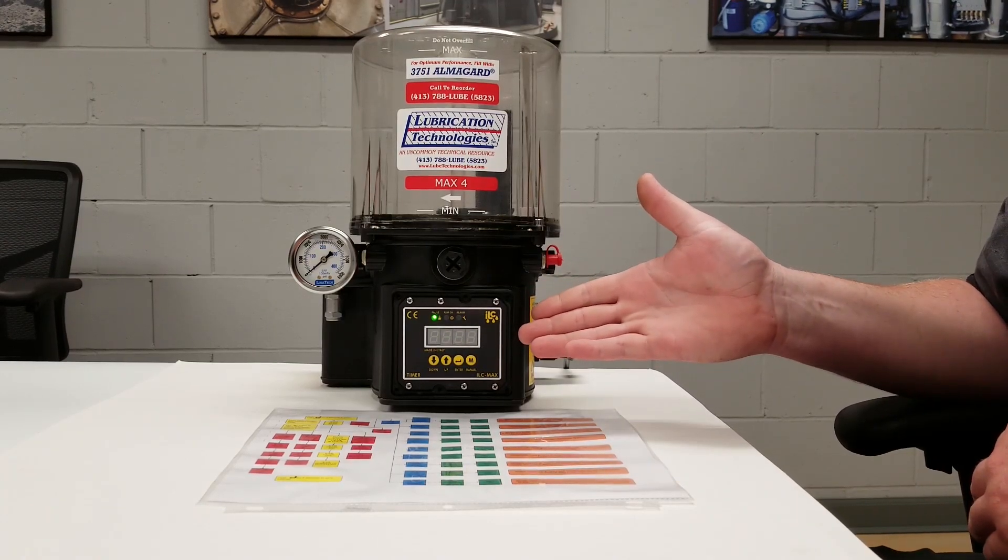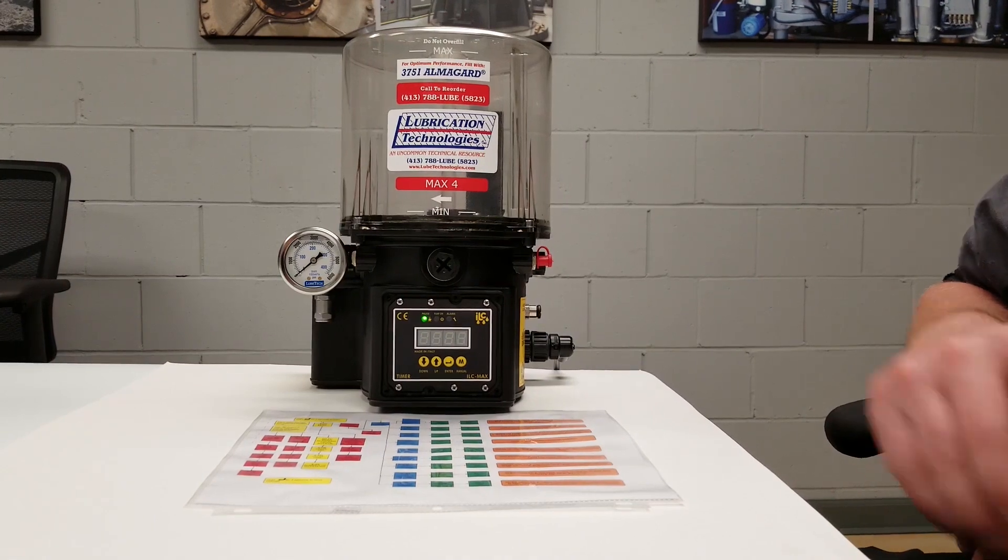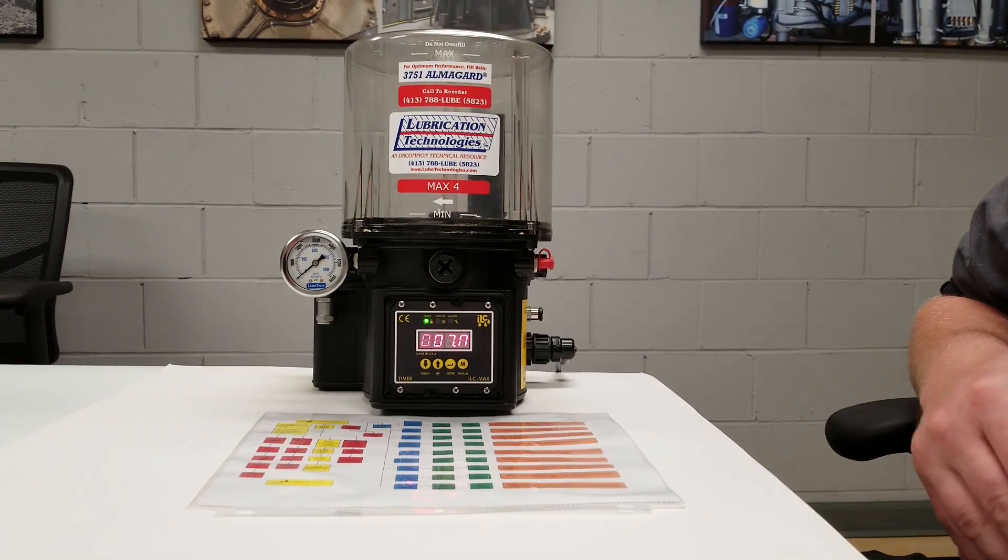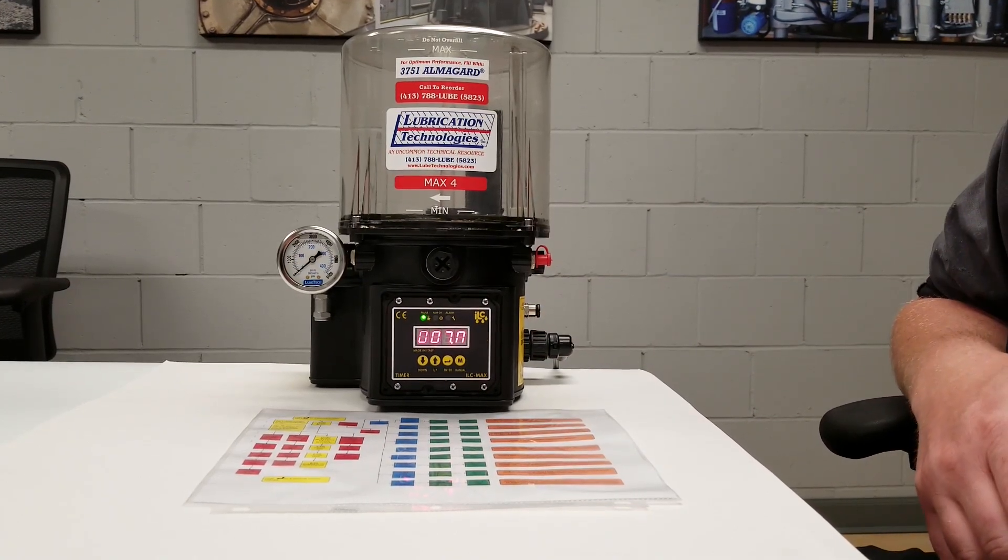So the screen also went blank because no buttons have been touched for a certain amount of time. Again if we want to see the display screen, we just simply press the up button and this tells me I have about seven minutes left before this pump comes on and runs another cycle.